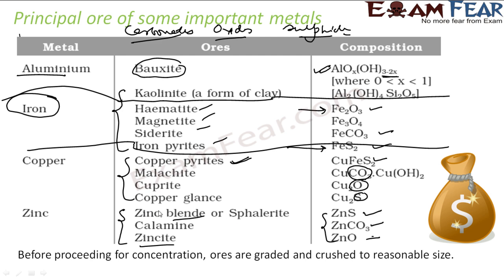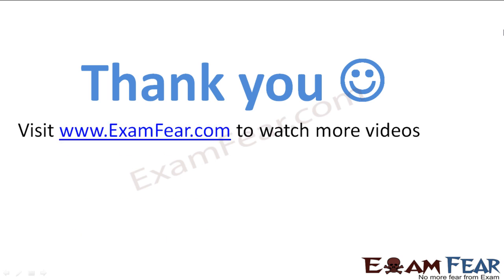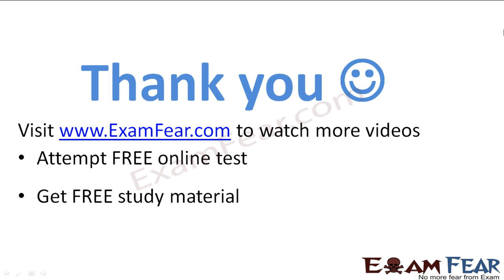Before starting chemical processes, ores obtained from the earth contain large amounts of impurities — gangue, mud, sand, and rocks — which must be removed first. Once a reasonable purity level is reached, we begin the chemical process. This removal of impurities is generally called the concentration of ore.